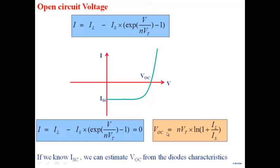This leads to the conclusion that there is probably an optimal band gap. Very large band gap gives nice VOC but low ISC; very small band gap gives large ISC but low VOC. So somewhere in between there is a band gap which is optimal.